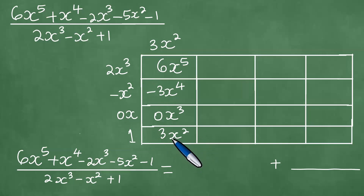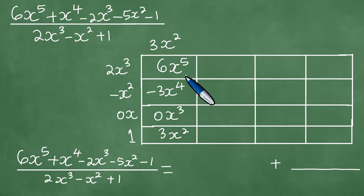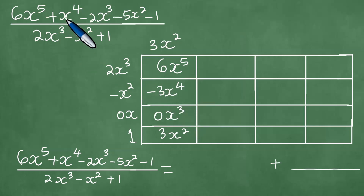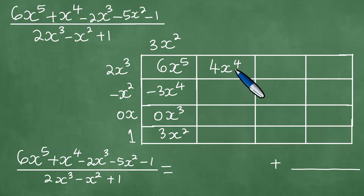The next thing we do is recognize the nature of the layout — it goes cubed, squared, first power, constant — so here we have power 5, 4, 3, 2. We then look at diagonal additions. We need to decide what to put in the next cell, but whatever we put must diagonally add to minus 3x to the fourth power to give us x to the fourth power. It can only be 4x to the fourth power, because 4x⁴ minus 3x⁴ equals x⁴ from the numerator.